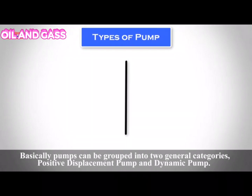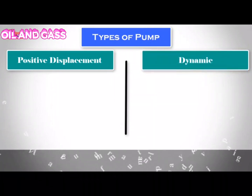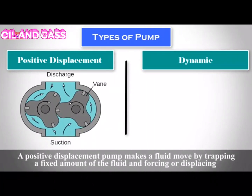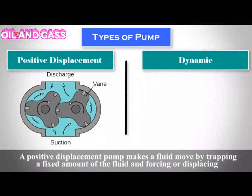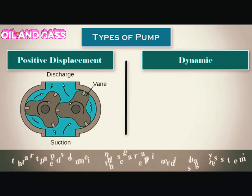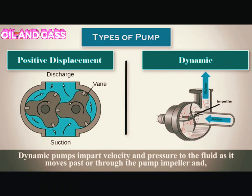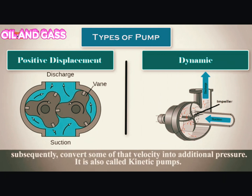Pumps can be grouped into two general categories: positive displacement pumps and dynamic pumps. A positive displacement pump makes a fluid move by trapping a fixed amount of fluid and forcing or displacing that trapped volume into a discharge pipe or system. Some positive displacement pumps use an expanding cavity on the suction side and a decreasing cavity on the discharge side. Dynamic pumps impart velocity and pressure to the fluid as it moves past or through the pump impeller, and subsequently convert some of that velocity into additional pressure.